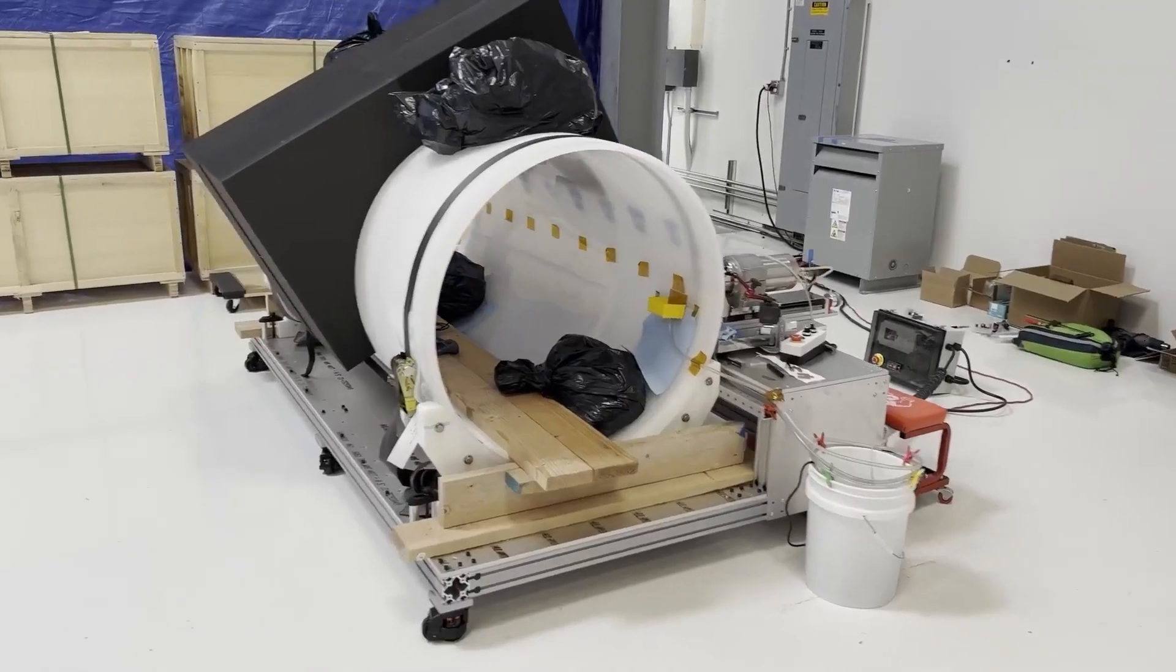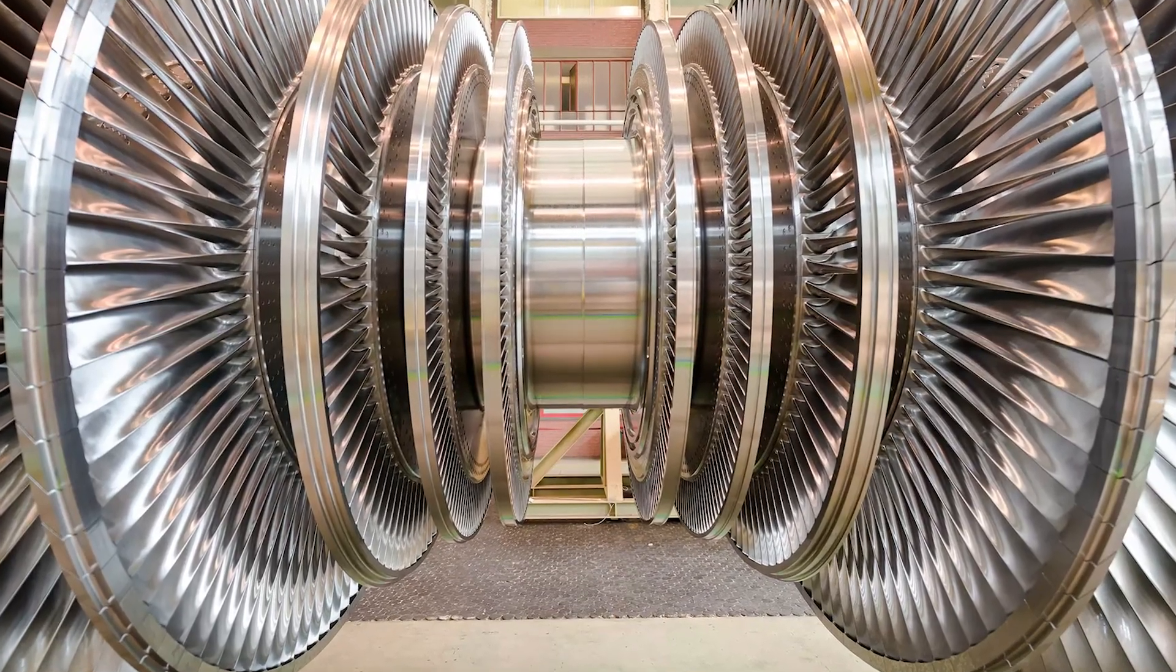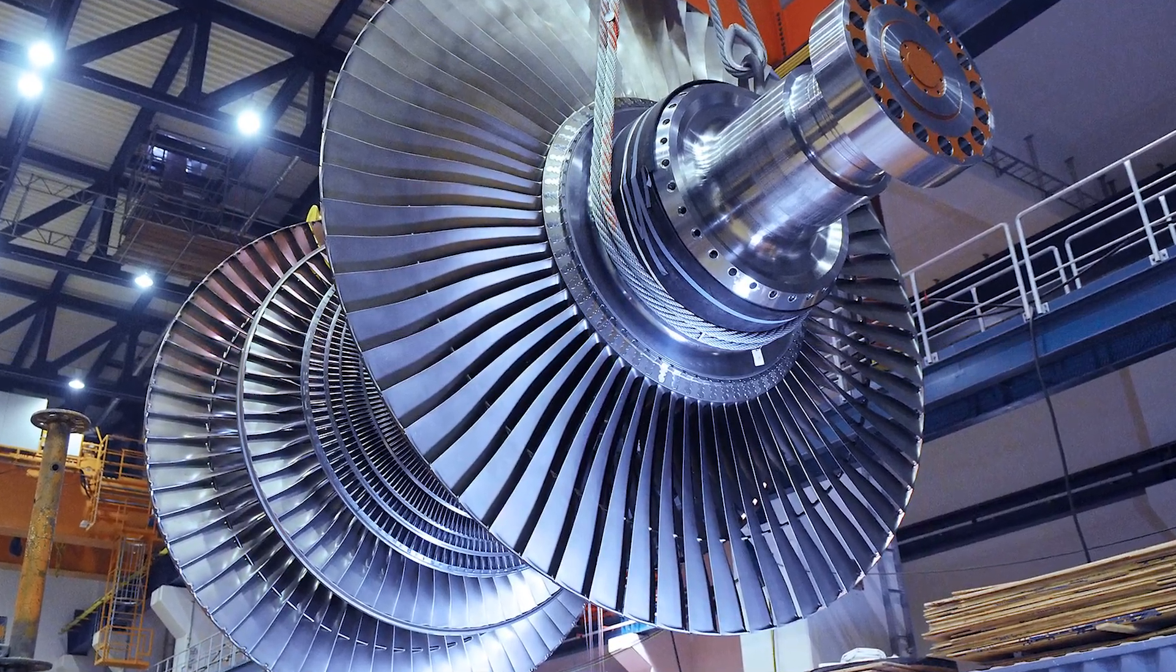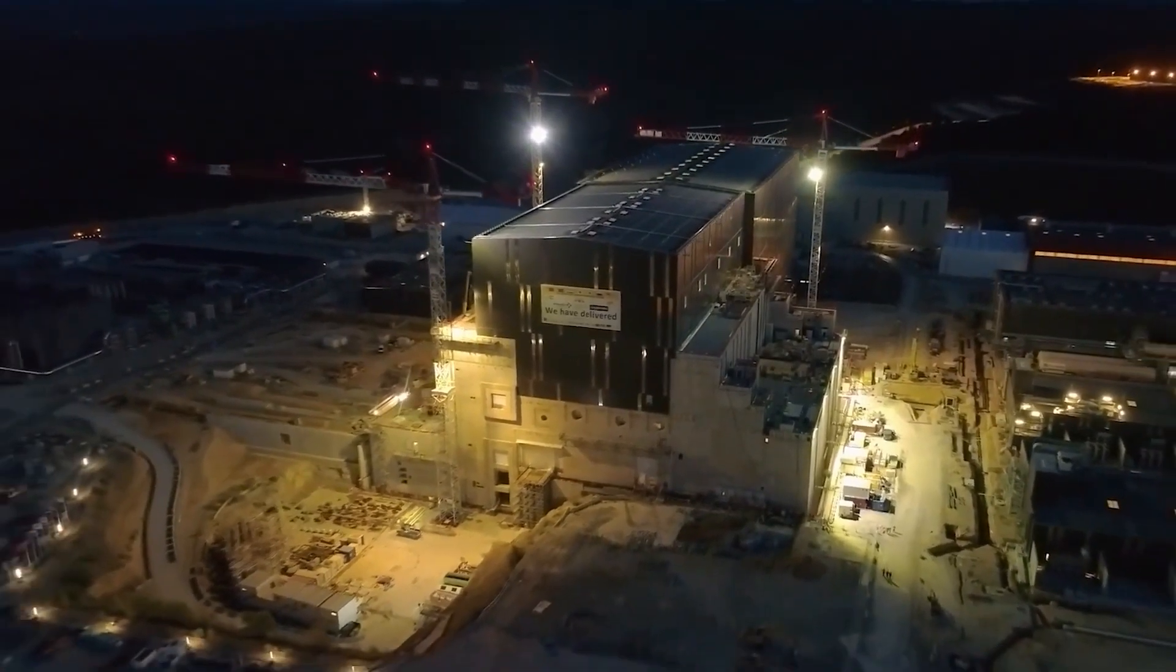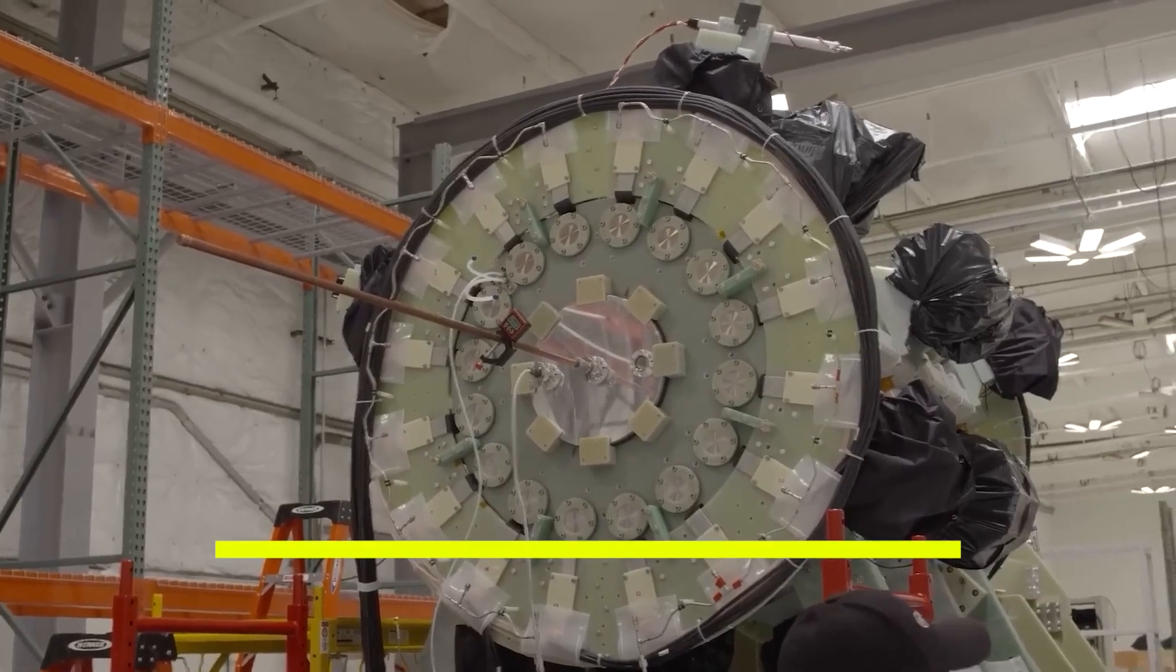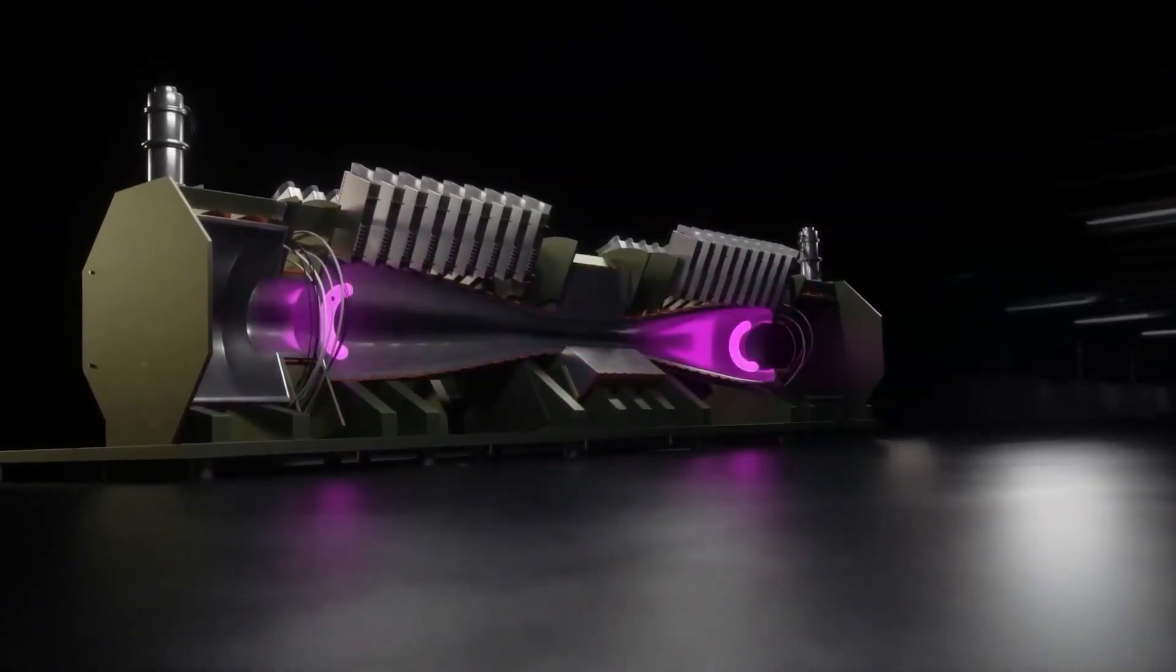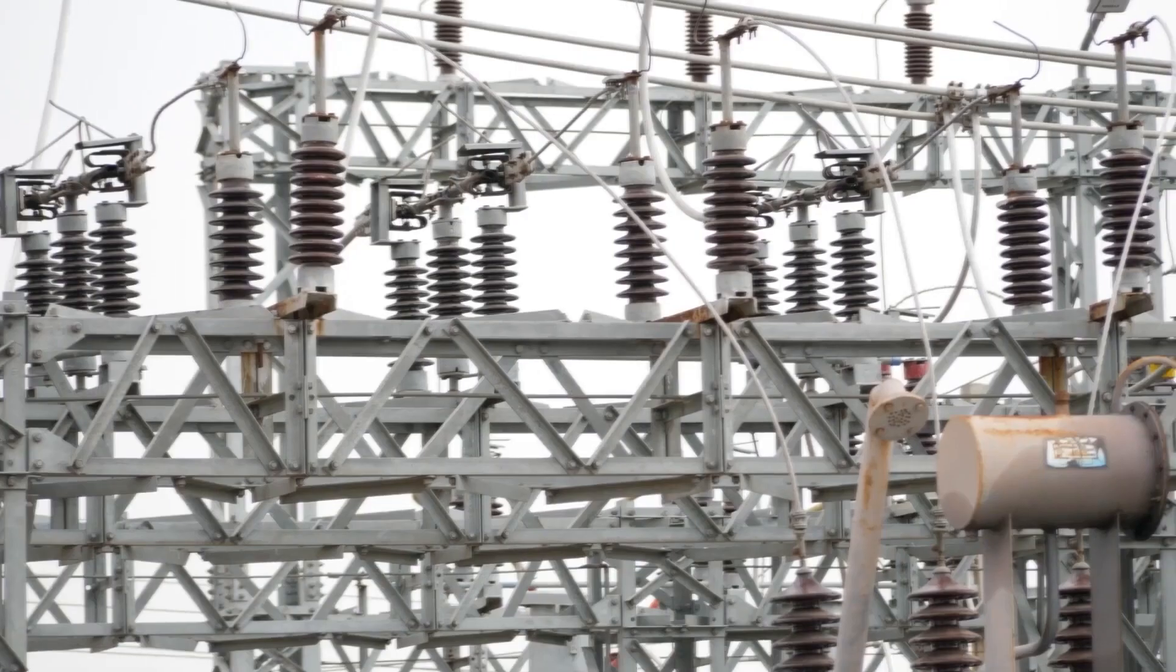What sets Helion's approach apart is their plan to generate electricity without the need for boiling water to produce steam for turbines. Traditional methods of fusion power often rely on steam turbines to convert heat into electricity, but Helion aims to eliminate this step. With their innovative magneto-inertial fusion technique, the plasma is magnetically confined and rapidly energized through compression, leading to a fusion event in just around 1,000th of a second. This groundbreaking approach sidesteps the necessity of boiling water, offering a more direct and efficient method of electricity generation.